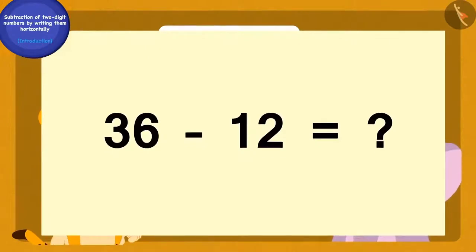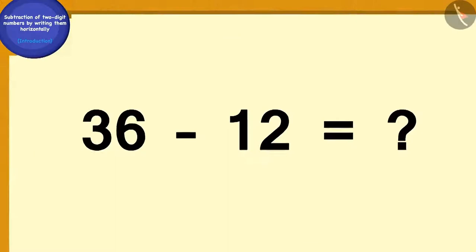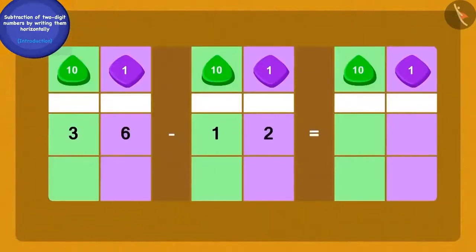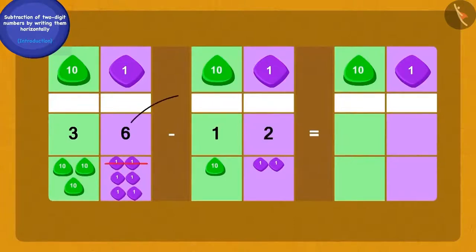Children, can you answer Bablu's question? Let us do this together. What we are going to do first? Yes, we will write 36 and 12 as 10 and 1 tokens like this. Now we will subtract the 2 ones of 12 from the 6 ones of 36. How many ones are we left with now? Yes, we have 4 ones left with us. Now finally, if we remove 1 tenth of 12 from 3 tenths of 36, then we will have 2 tenths left. We have thus got our answer.